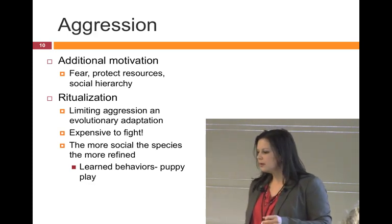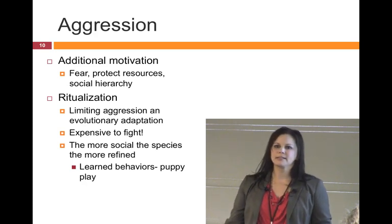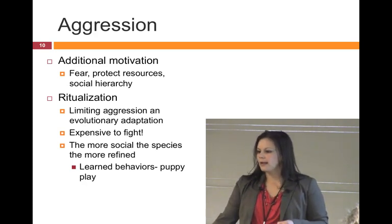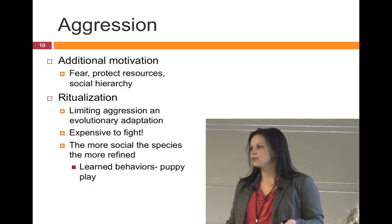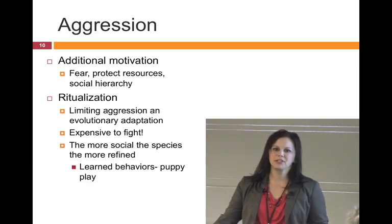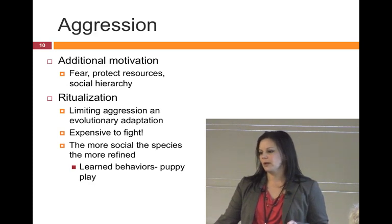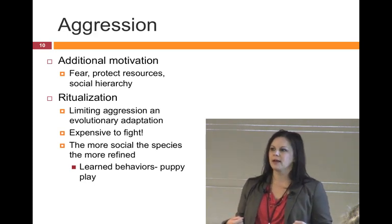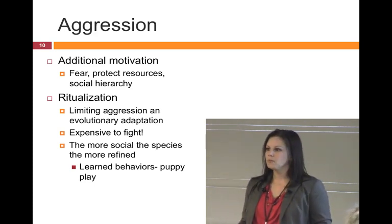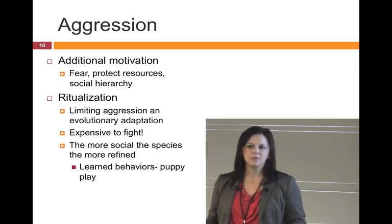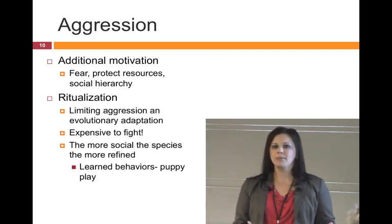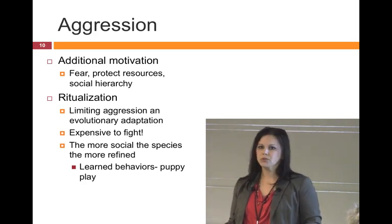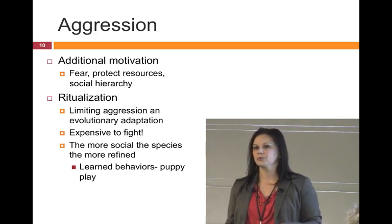Moving on to aggression — most aggressions are agonistic or distance increasing, with underlying motivations of fear, protecting resources, or social hierarchy. The cool thing about aggression in social species is that a lot of it has been ritualized. It's expensive to get into a physical fight — you're going to get injured and be less reproductively successful. Ritualized displays carry a lot of information and allow animals to avoid actual combat. The more social the species, the more likely those behaviors are to be ritualized, which gives us information to read.